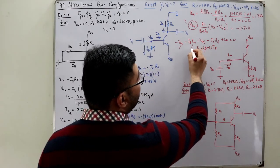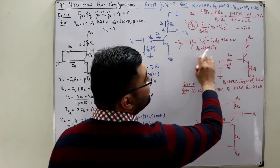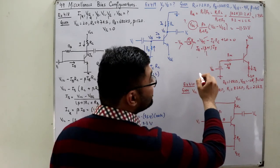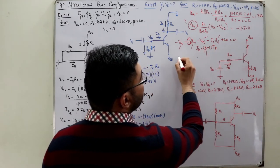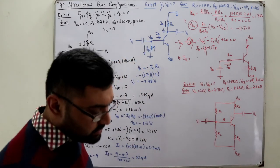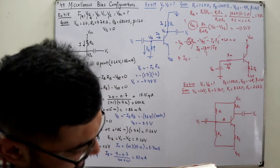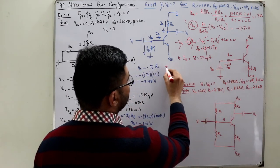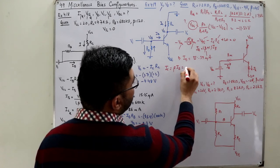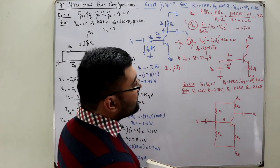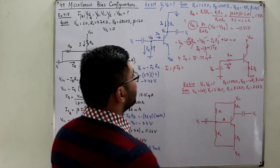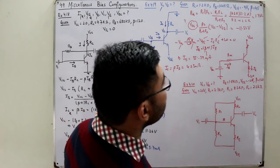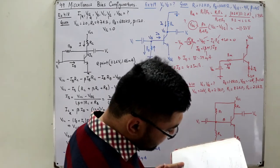Substituting IE = (beta + 1)·IB, you have all known quantities except IB. Solving gives IB = 35.39 microamperes. IC is then beta times IB: with beta = 120, IC comes out to be 4.25 milliamperes.